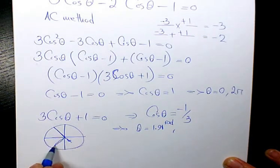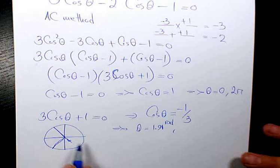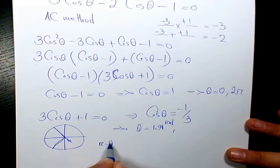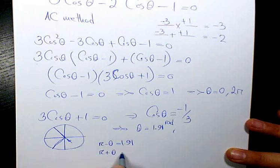So we have 2 and 3 here, so we have π minus theta equals 1.91, and we need to also find out π plus theta.